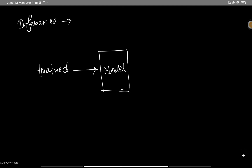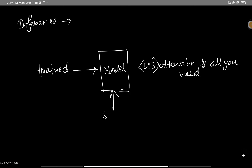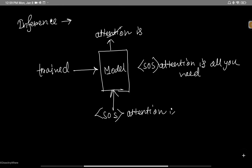For example, the input sentence we've been using in this series is: 'Attention is all you need.' This is the input sequence we feed to the model to generate output. In next word prediction, we first feed a start-of-sentence token to the model and expect it to produce 'attention.' Then 'attention' is added to the input and fed to the model, which now produces 'is' as the next token.